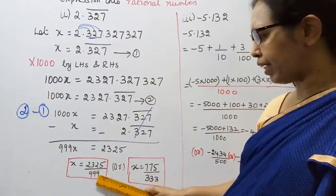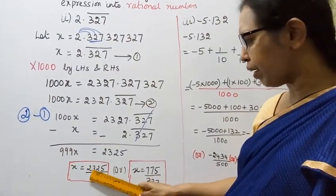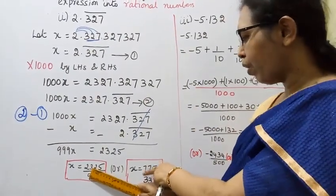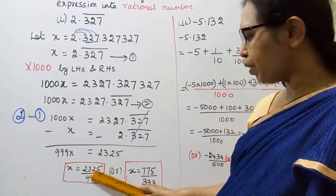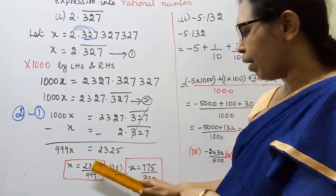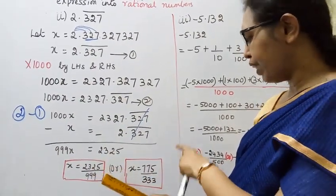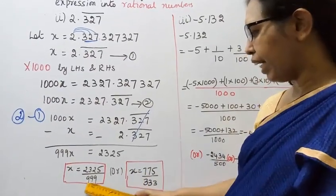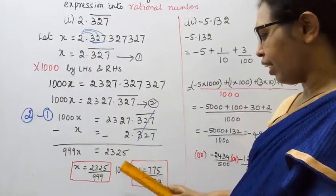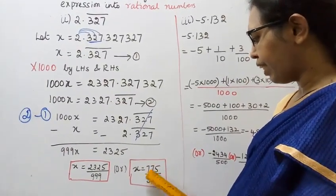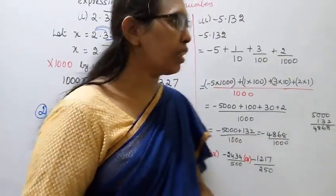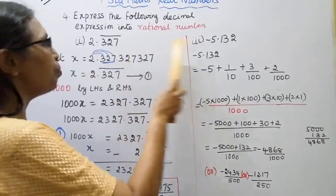x equals 2325 divided by 999. If you cancel this by 3, 775 into 3, 333 into 3. Balance 15, 15 is 15. x equals 775 by 333. That's the answer for second problem.